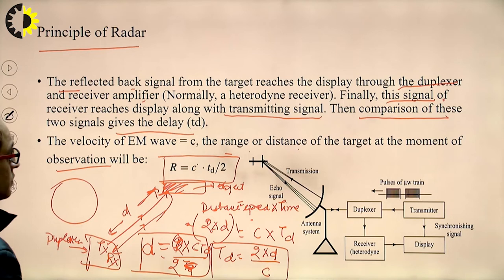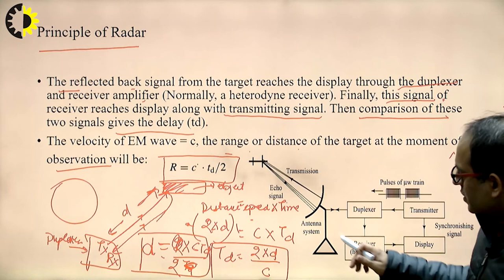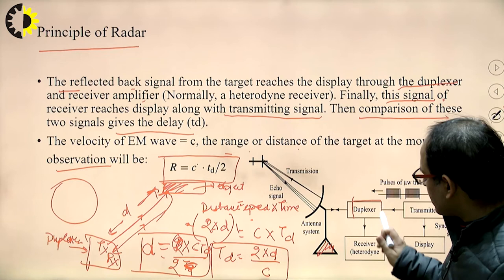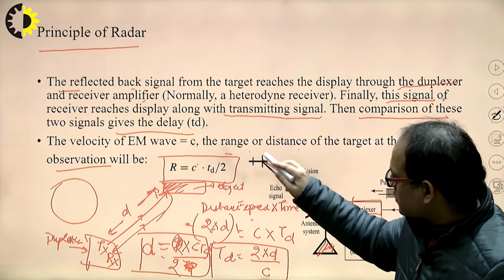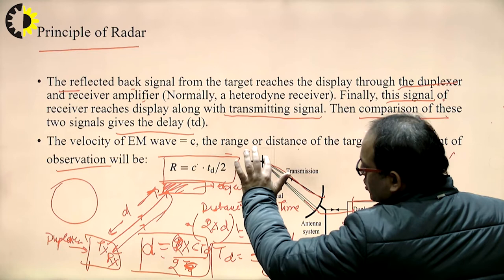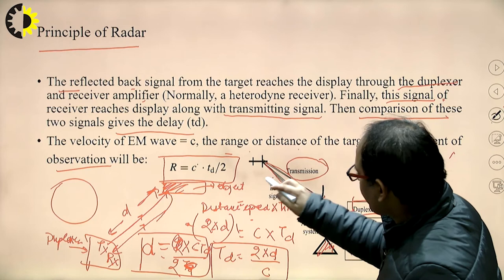Looking at the block diagram, the antenna system includes a duplexer which can act as both transmitter and receiver. When transmitting, it sends the signal to the target; the plane or object receives the signal, and the radio waves reflected by the object return back to the radar system. The transmitted signal and the reflected echo signal are both processed through this system.